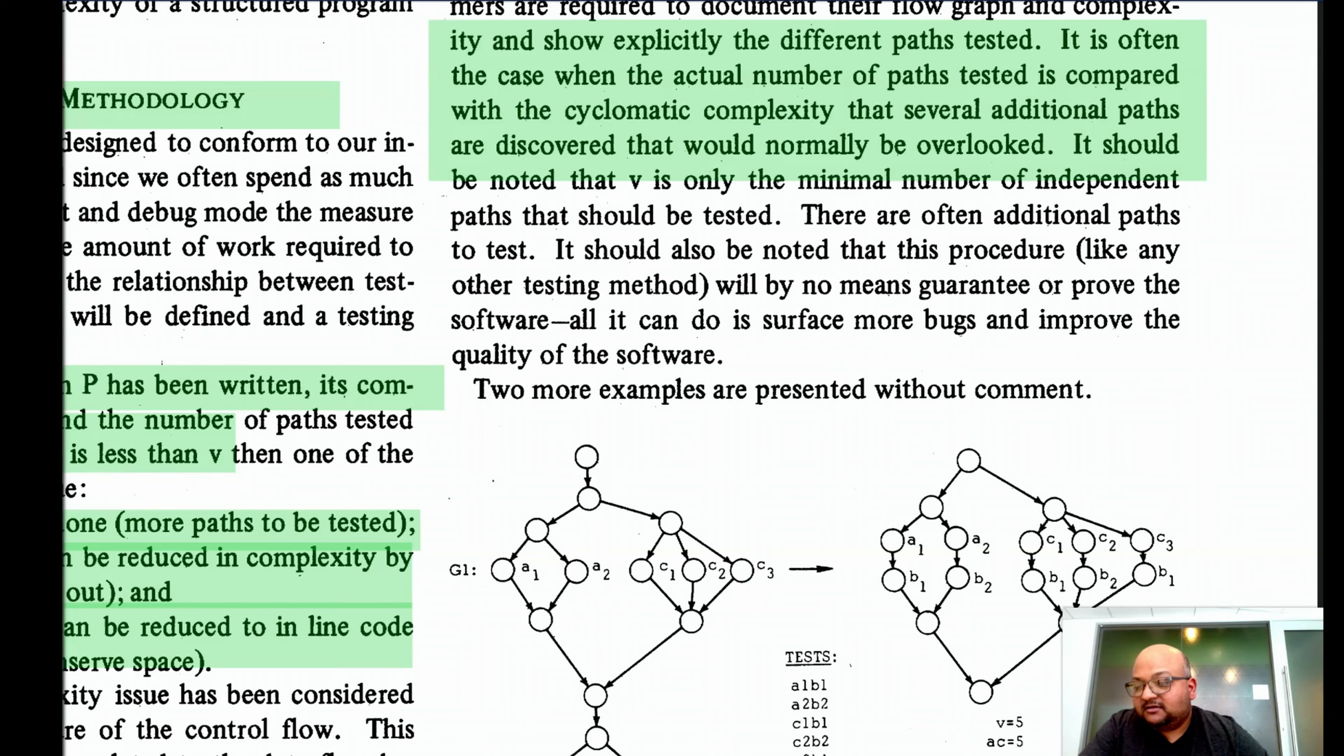So that was a look at McCabe's original paper that proposed cyclomatic complexity. I'll just end with a couple of quick thoughts on how I have seen it used in practice. Now, this measure has been critiqued a lot in software engineering academia, but it still continues to be used heavily in industry.